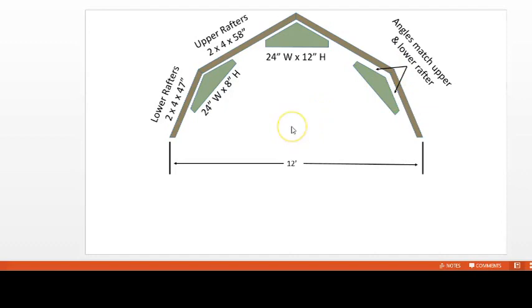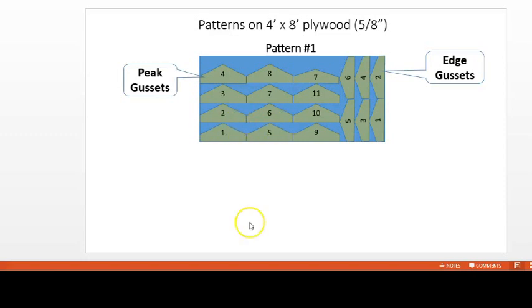Now let's look at how to lay out the gussets on a sheet of plywood. The gussets should be cut from plywood no thinner than 5/8 of an inch. 3/4 of an inch is better. There are basically two patterns you can use.